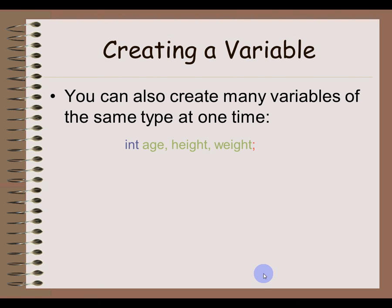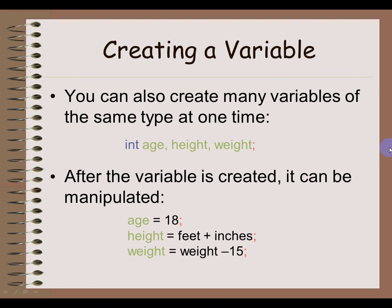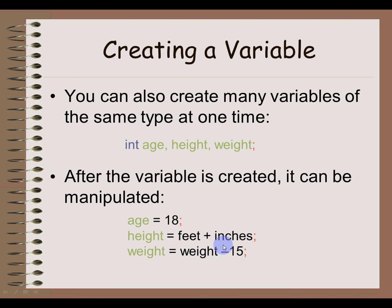One more thing about creating a variable: if you want to create more than one variable of the same type, you can do it in one line of code by separating the names with a comma. Once we've created our variable, we can start manipulating the data stored inside it. We do this by putting whatever we want on the right-hand side of the equation — it will be stored into the variable on the left-hand side. So the number 18 is stored in my age variable; values from two variables can be added together to give my height; and if I have a weight of 200 pounds and subtract 15, that new calculated value will be stored in my weight variable.